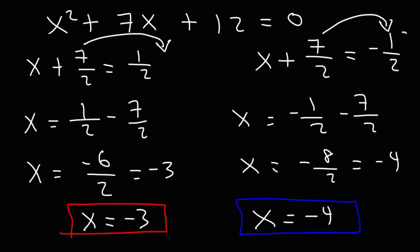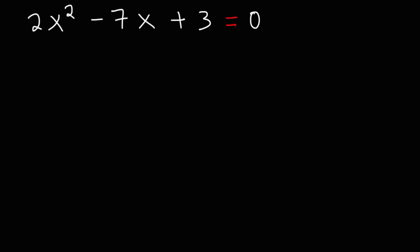So that's it for this particular quadratic equation — that's how you can solve it. Now let's try a harder example. This time the leading coefficient is not 1, but it's a 2, so this is going to take a little longer to solve. For those of you who want more examples on solving quadratic equations by completing the square method, check out the links in the description section below after you finish watching this one, because I'm going to post some other videos with more example problems you could work on.